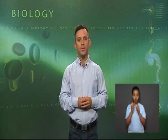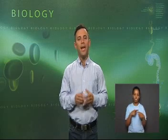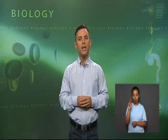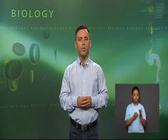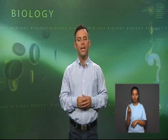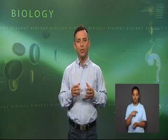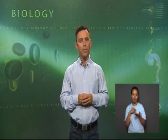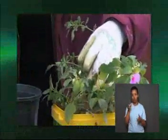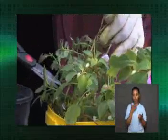The term clone can be applied to entire organisms, as well as to genes. A clone of organisms is a group of organisms produced asexually from one parent. Each member of the group is identical to one another, as well as to the parent. Plants produced from cuttings are a good example of clones.